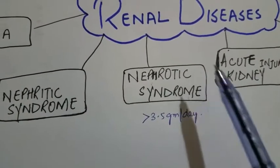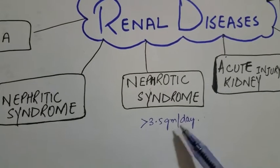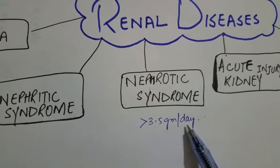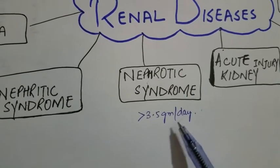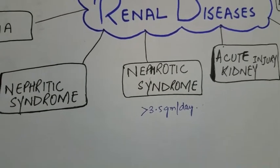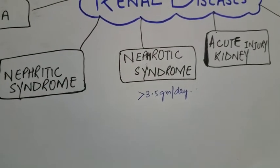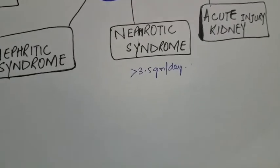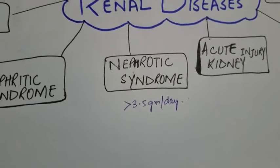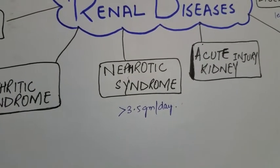Nephrotic syndrome is characterized by heavy proteinuria greater than 3.5 grams per day, resulting in hypoalbuminemia, edema, and hyperlipidemia.